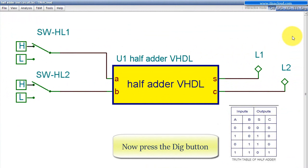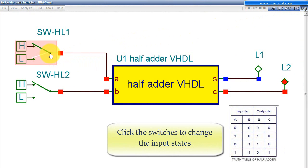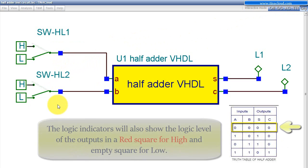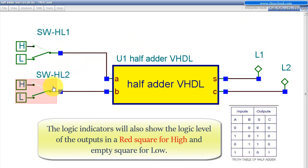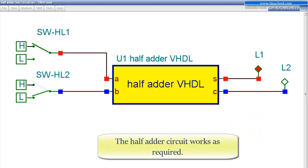Now press the Dig button. Click the switches to change the input states. The logic levels of the node appear: red for high, blue for low. The logic indicators will also show the logic level of the outputs in a red square for high and empty square for low. The half adder circuit works as required.